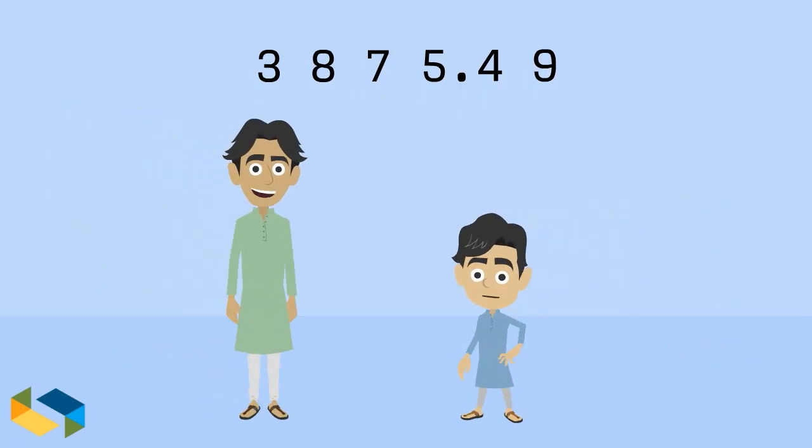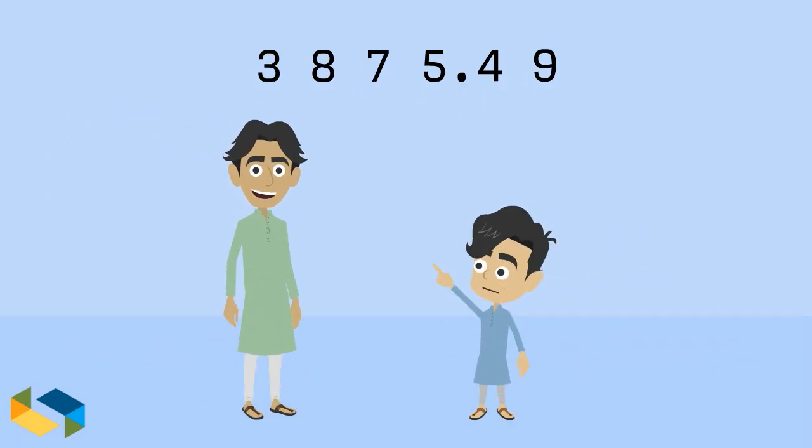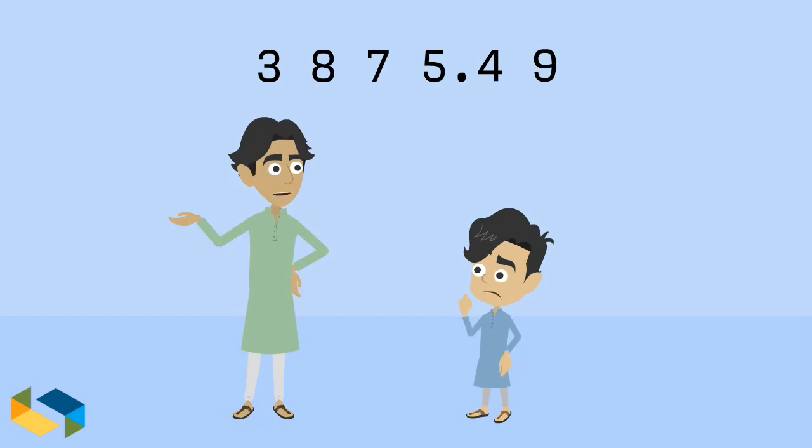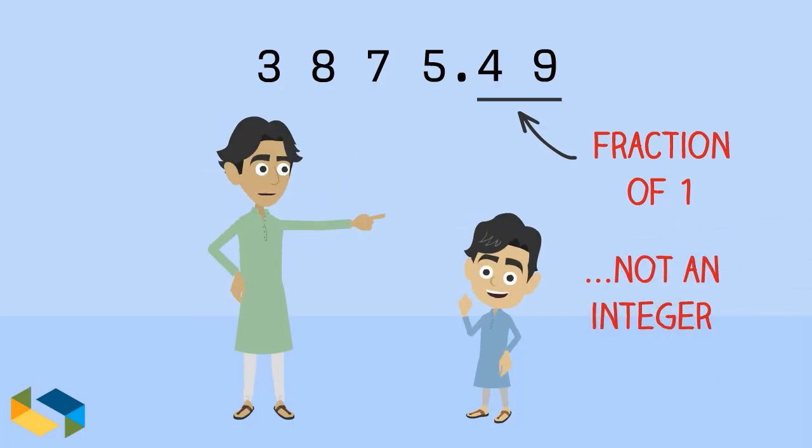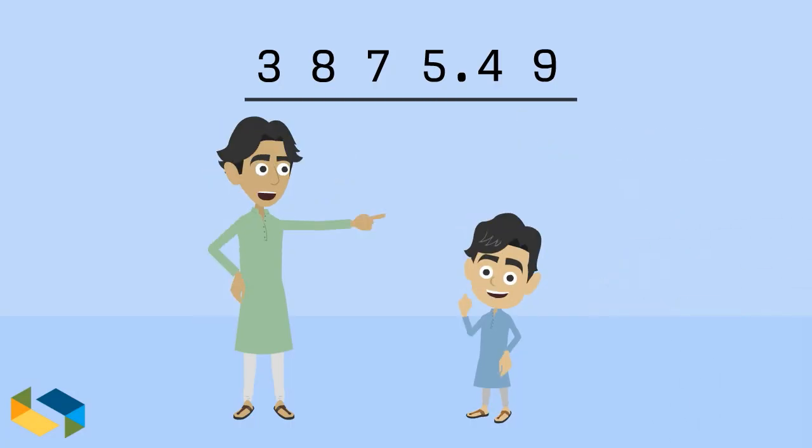Great! Let me read this. 3875.49. Yeah, but you don't read it like that. The digits here are decimal digits remember. They signify a fraction of 1, certainly not an integer. So you read the number as 3875 point 4 9, and not 49.